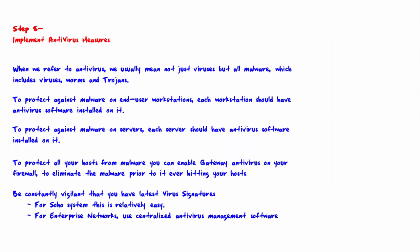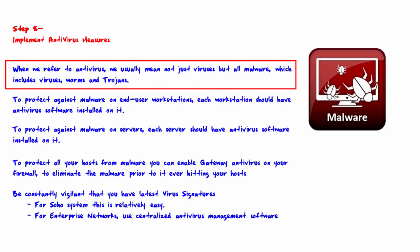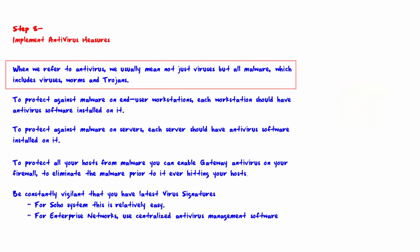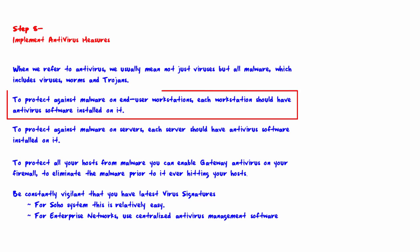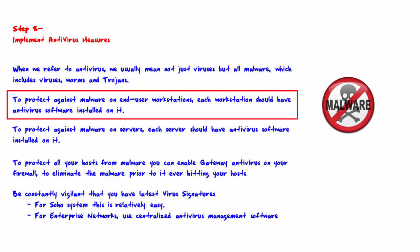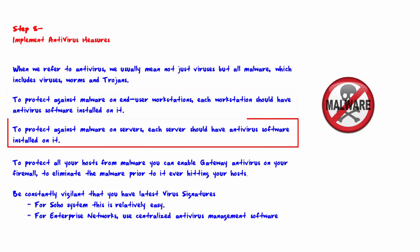Welcome to step 8, where we implement antivirus measures. When we refer to antivirus, we usually mean not just viruses but all malware, which includes viruses, worms, and Trojans. To protect against malware on end-user workstations, each workstation should have antivirus software installed on it. To protect against malware on servers, each server should also have antivirus software installed.